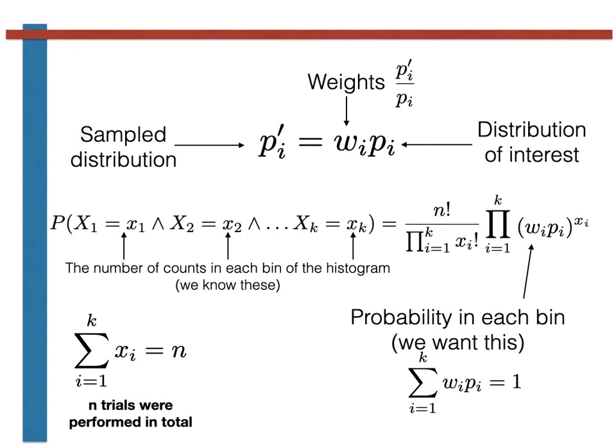The only difference is that we are using the weights, the wi, to write the probability of falling in the ith bin when we sample from p prime in terms of the probability distribution of interest, p.